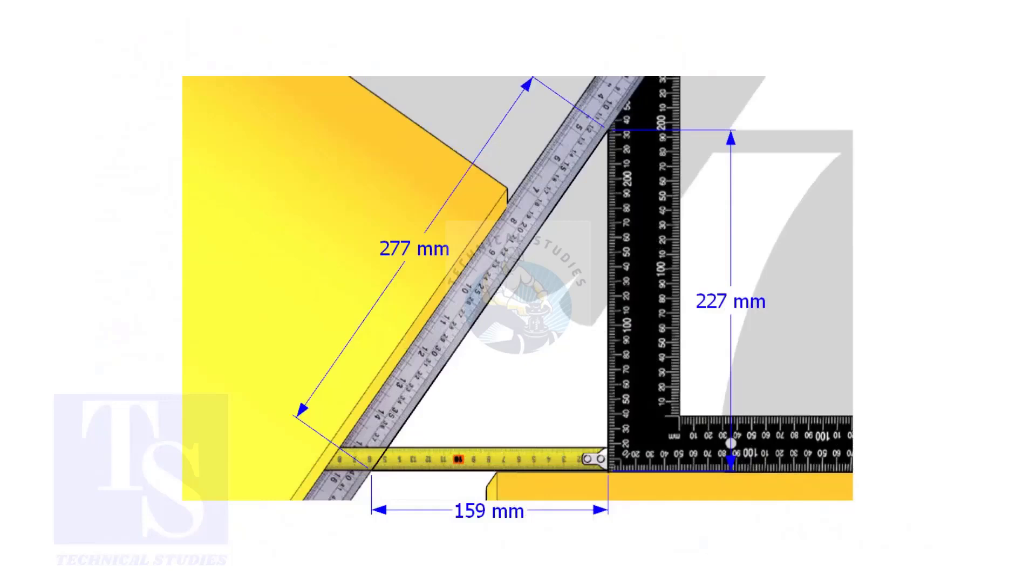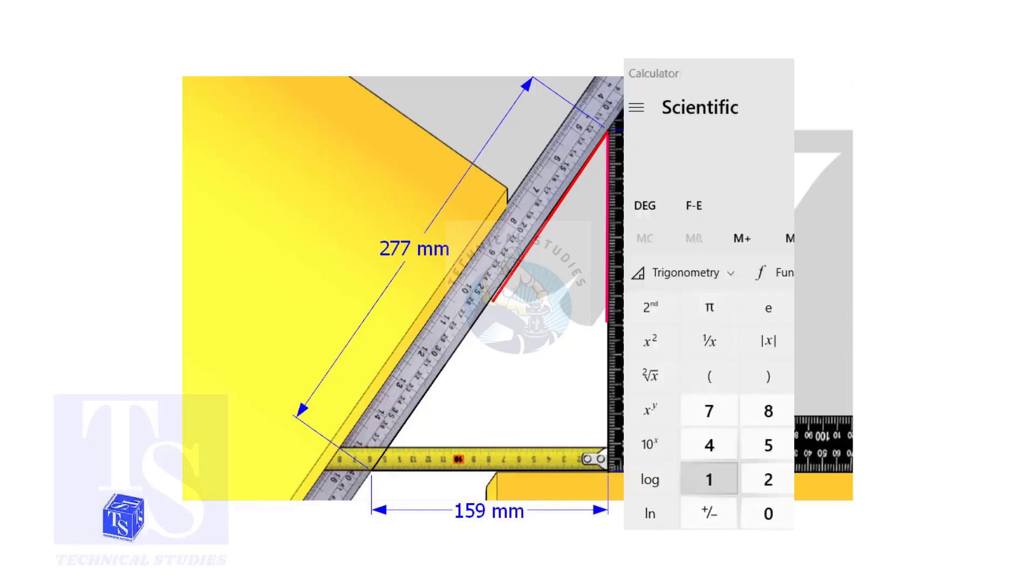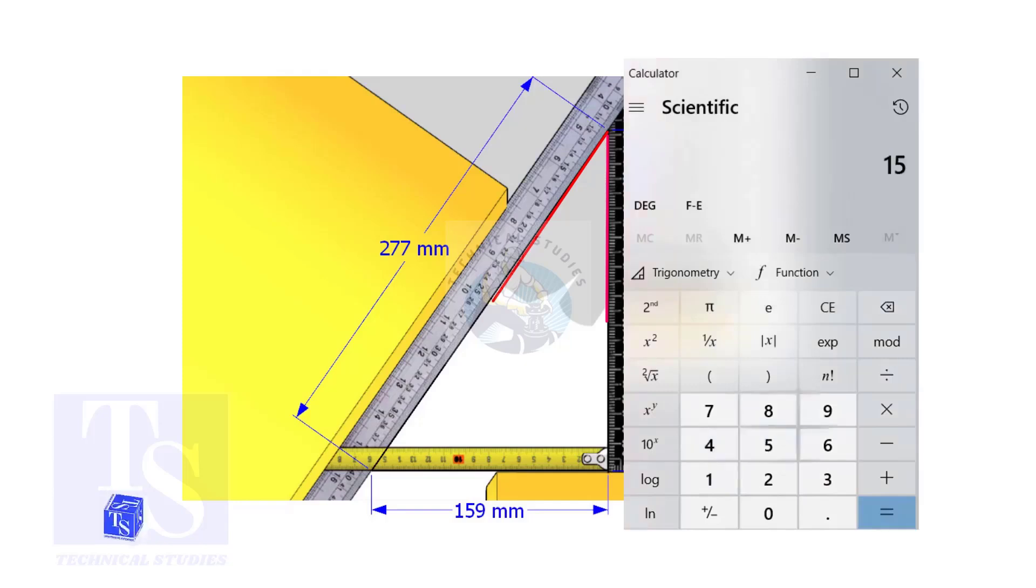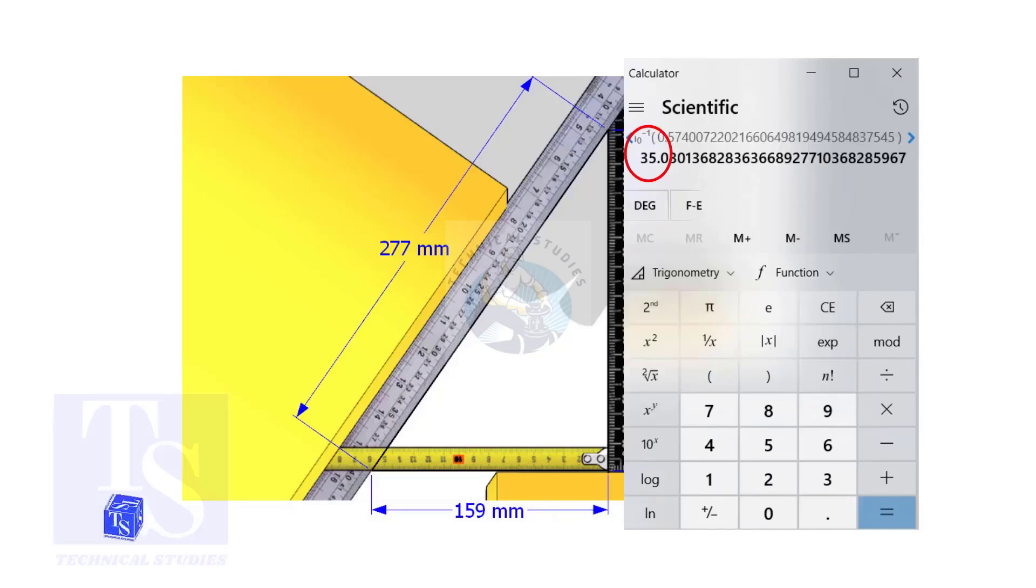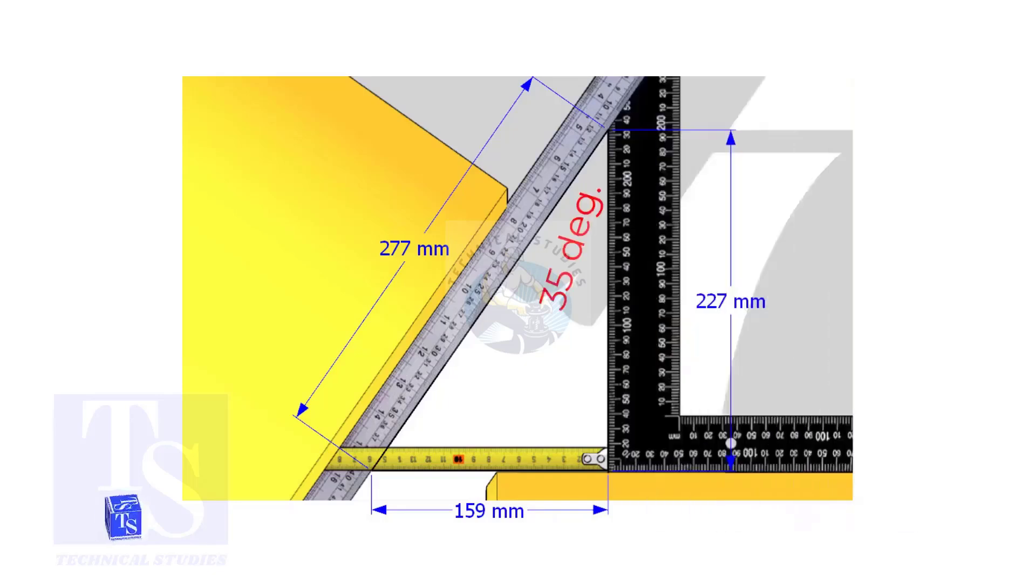Let us calculate the including angle. If you apply the sine rule, the angle will be 159 divided by 277, shift sine. So the answer is 35 degrees.